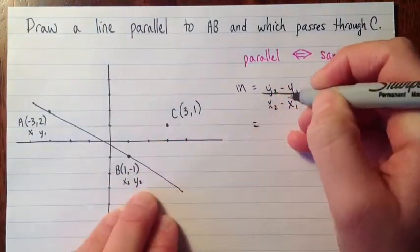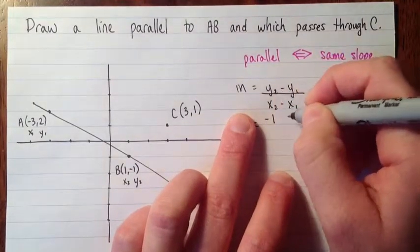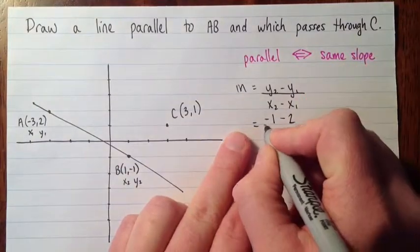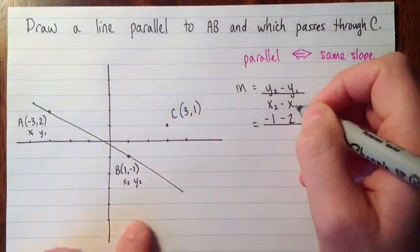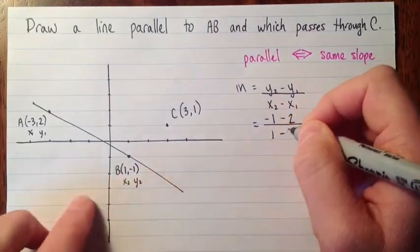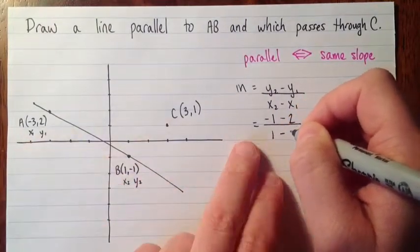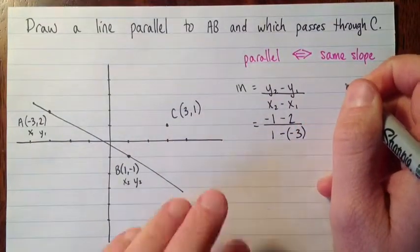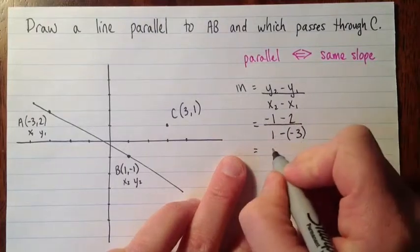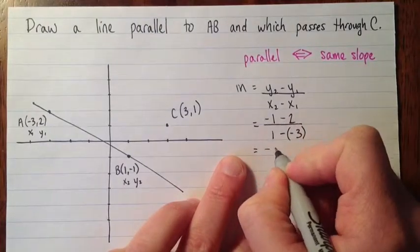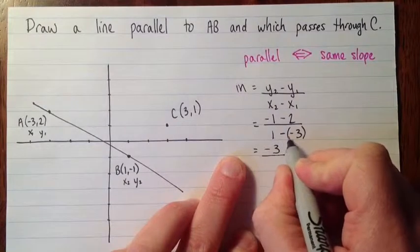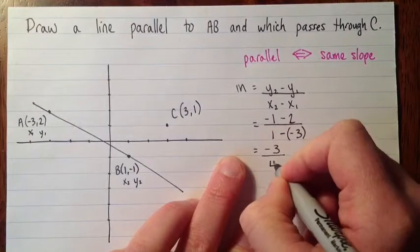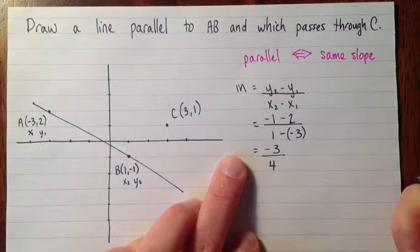So then that gives me my slope of y2 is negative 1, subtract y1 is 2, over x2, so that's 1, subtract x1 is negative 3. So here's one of those cases where we've got to watch those negatives really sharply. So we've got negative 1 subtract 2, so that's negative 3. 1 subtract negative 3, so that's 1 plus 3. So that's negative 3 fourths.